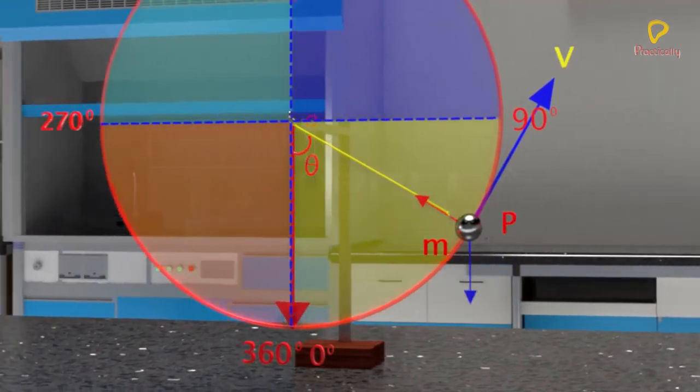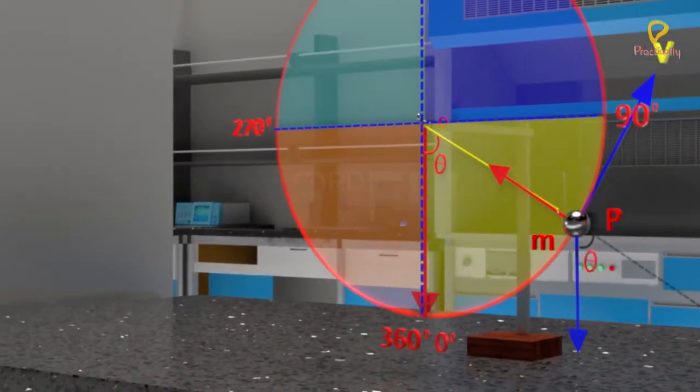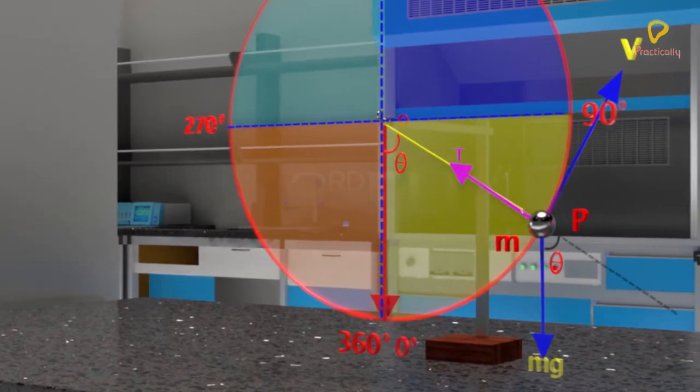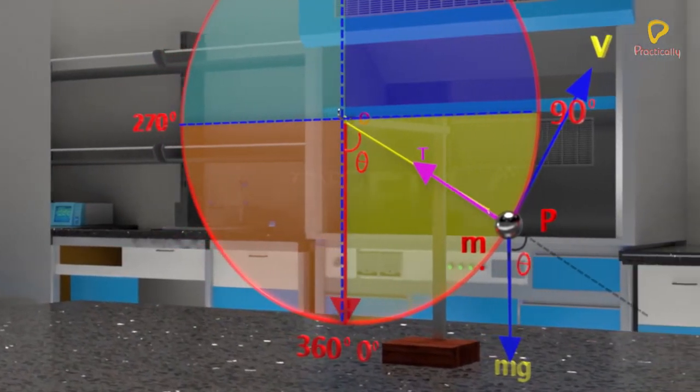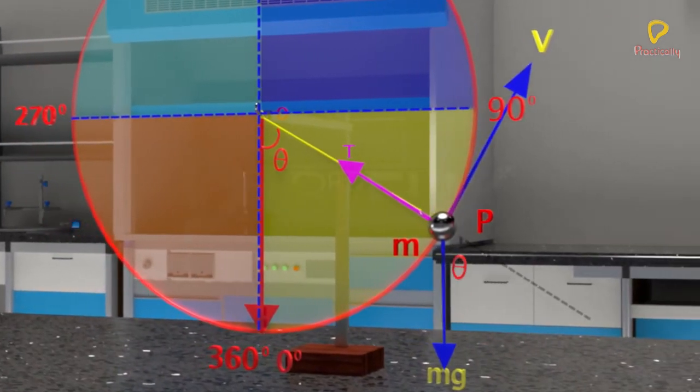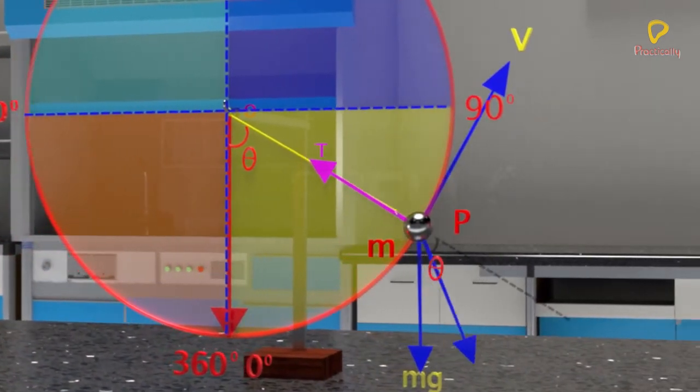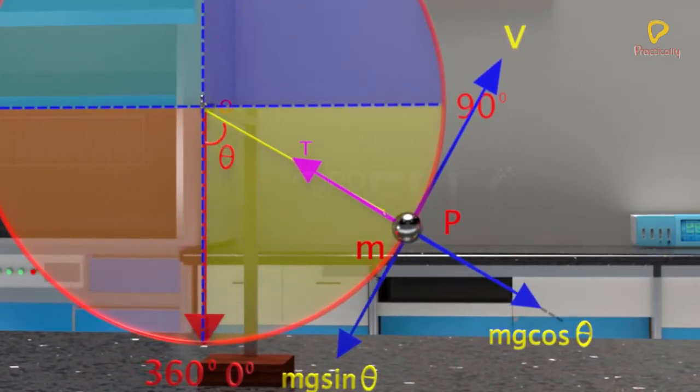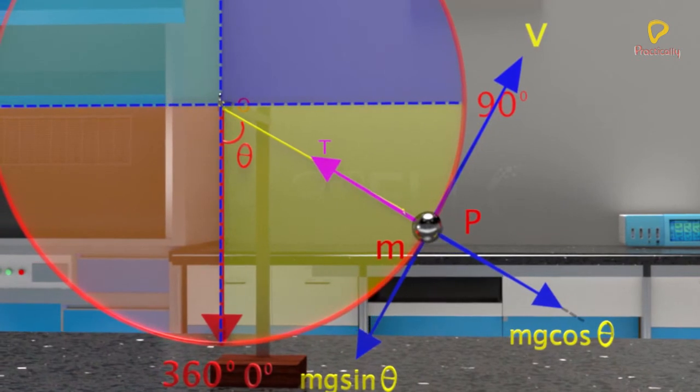Let's draw the free body diagram of the bob at P. At P, tension T acts along the radius. Gravitational pull Mg acts in a vertically downward direction, which can be split into two components: one in the radial direction and the other perpendicular to it.